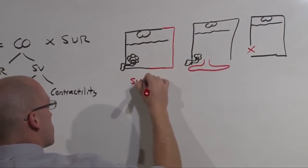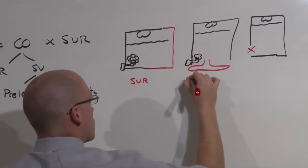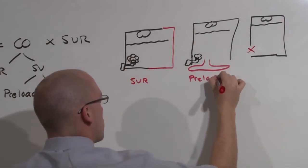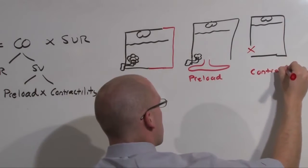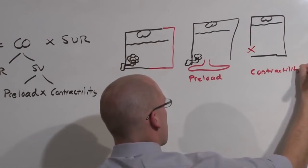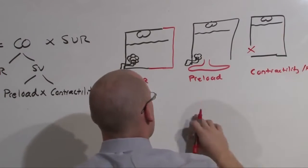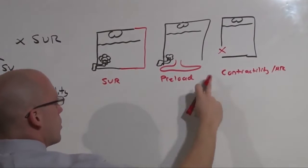This was systemic vascular resistance, this was preload, and this was contractility and heart rate. The tank, the fluid, and the pump.